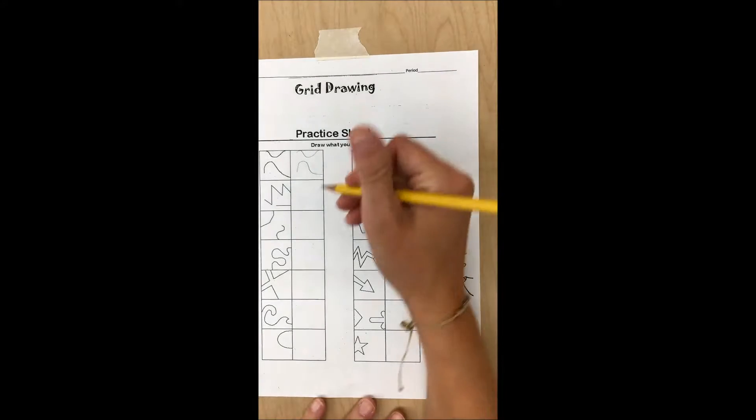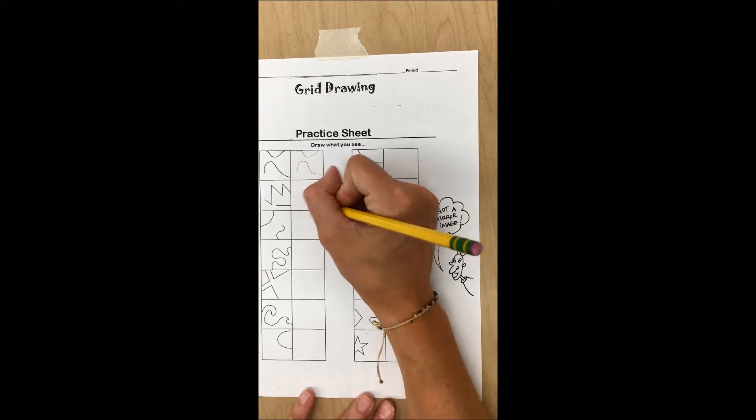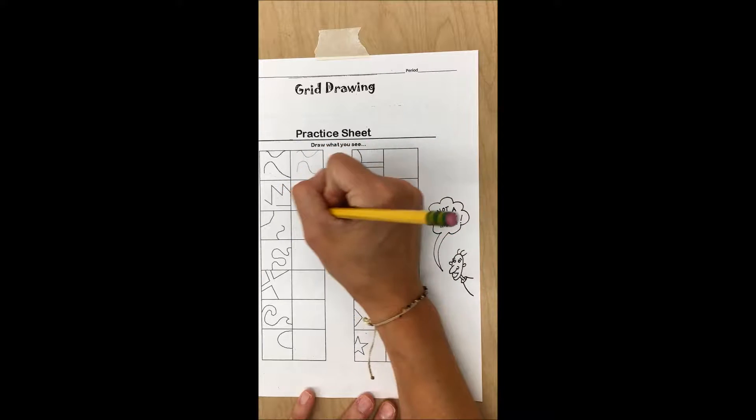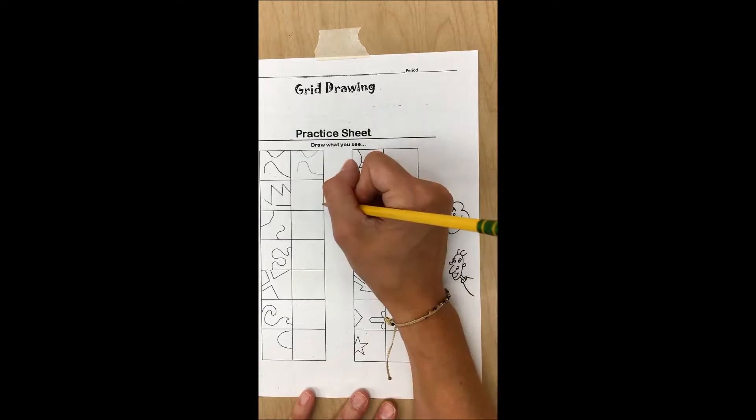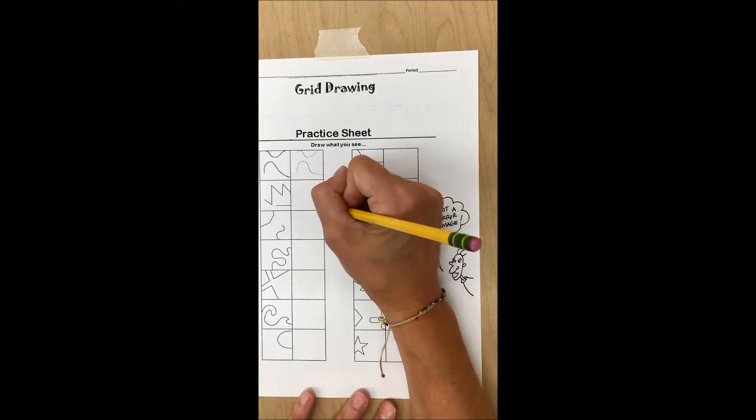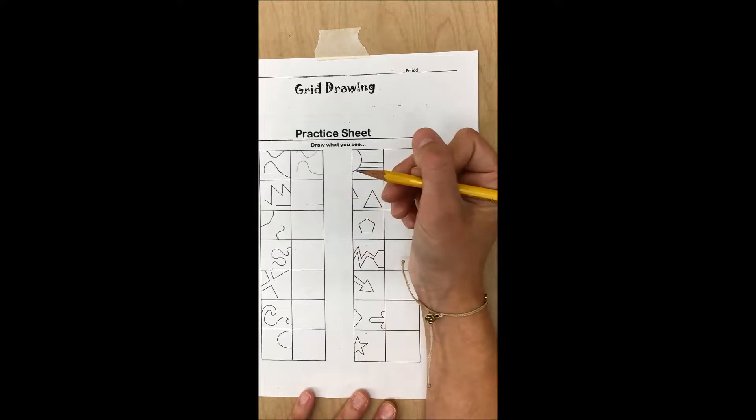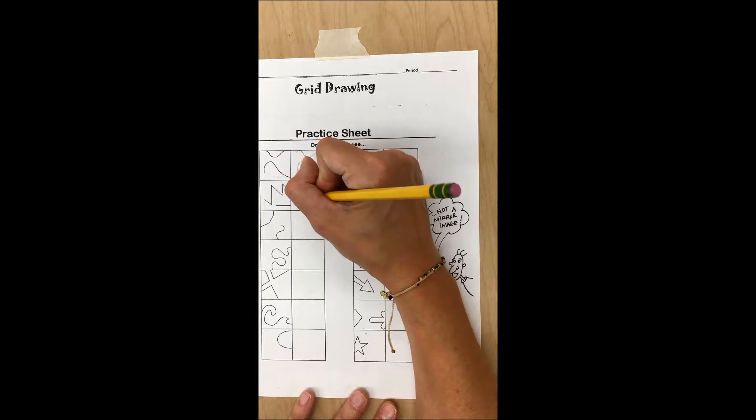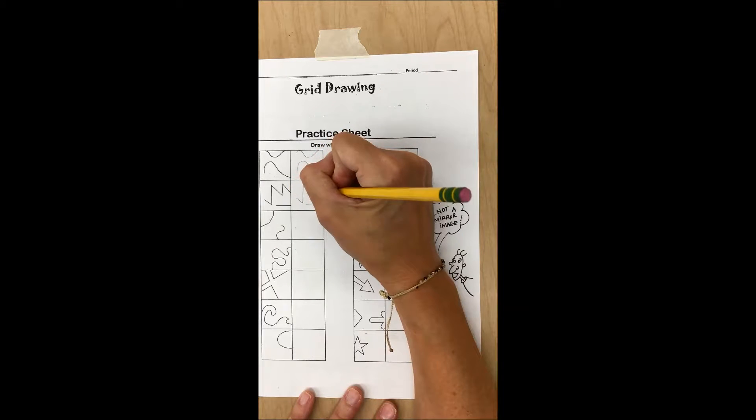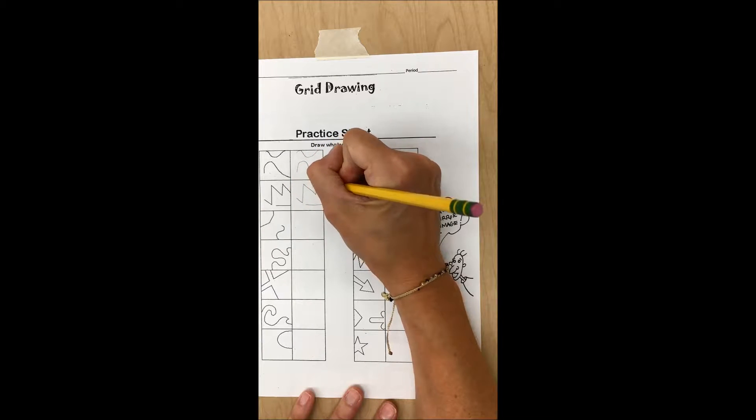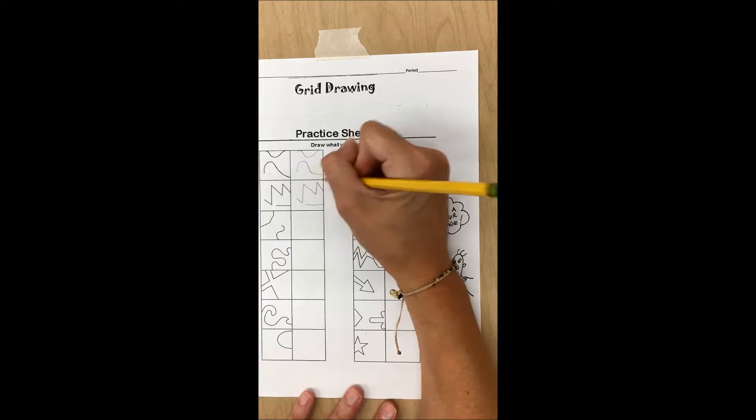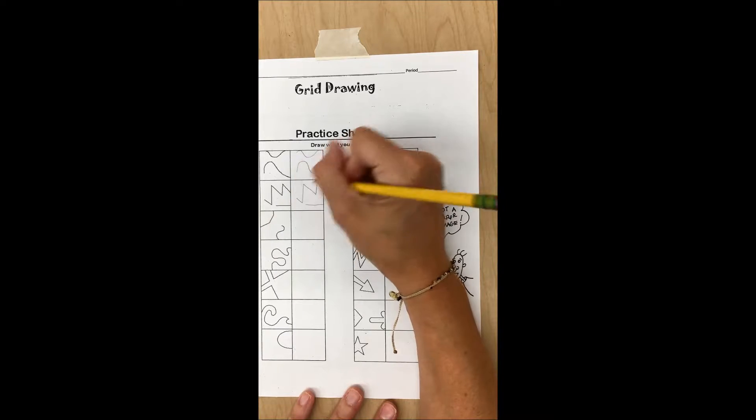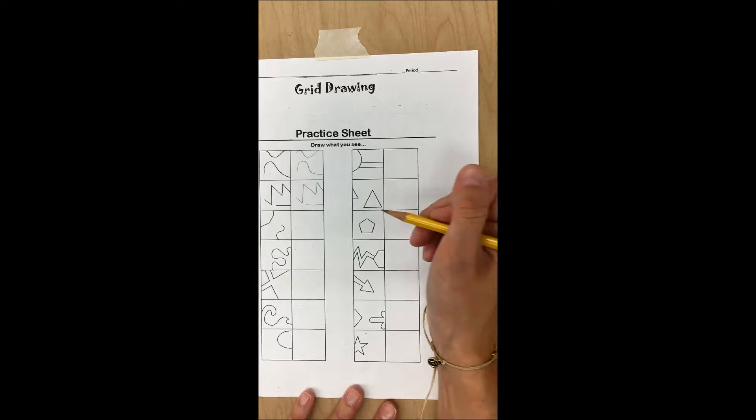So as I draw, I use the perimeter of the box to help me decide how high or low a line may go. I also use the other elements in the box to help me figure out placement in the box. As I draw it, I'm keeping in mind about those edges, how high or low does it come.